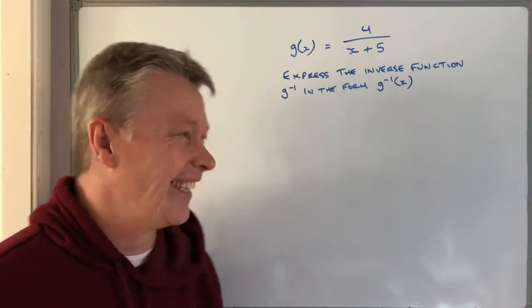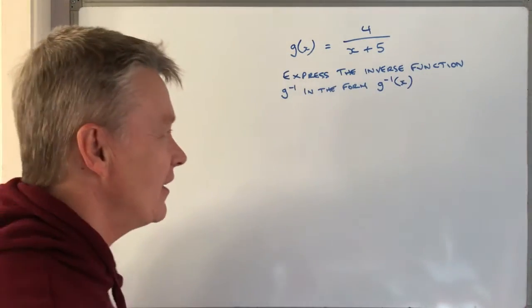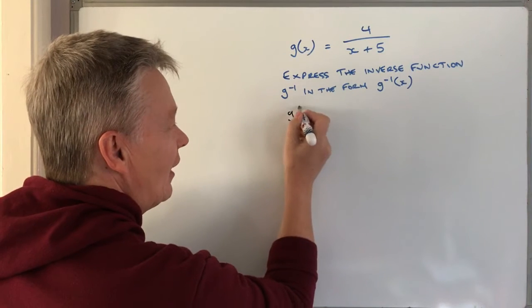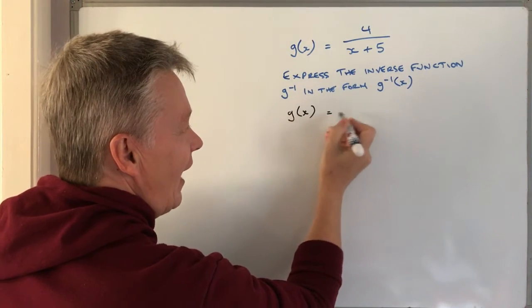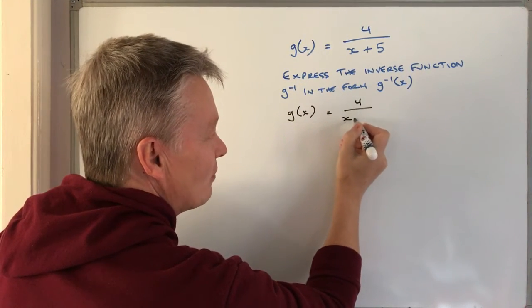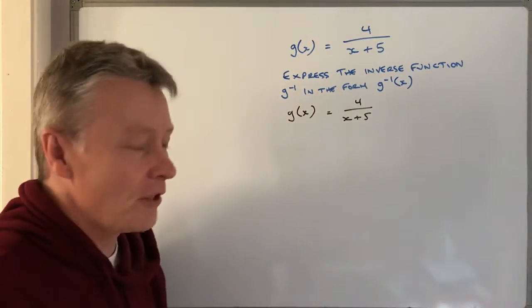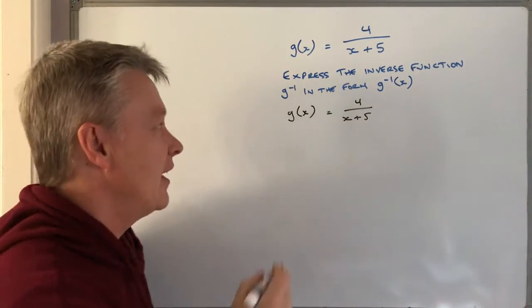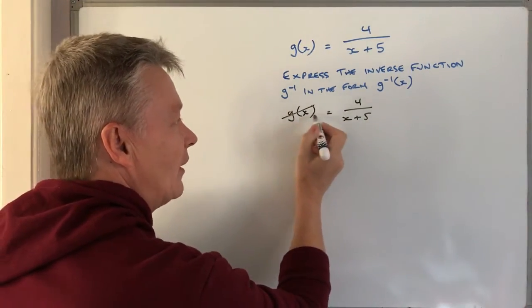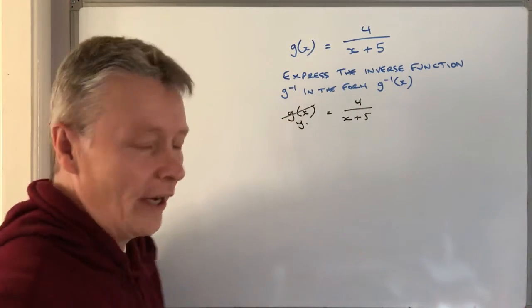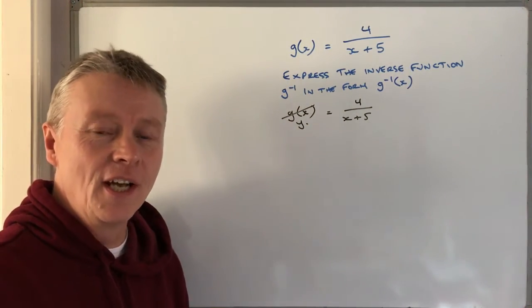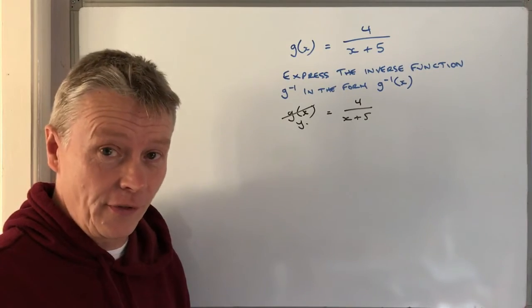What we basically mean by that is if we have g(x) = 4/(x+5), what I'm going to do just to make it easier is swap that and call it y, because it makes the method we're going to use a little bit easier.